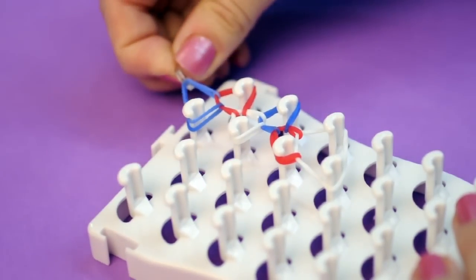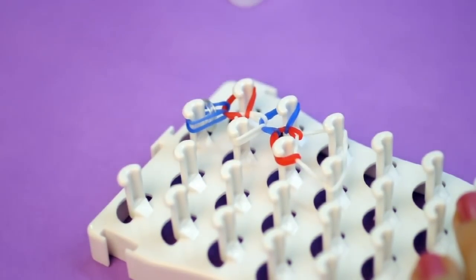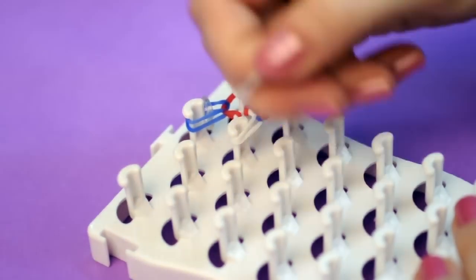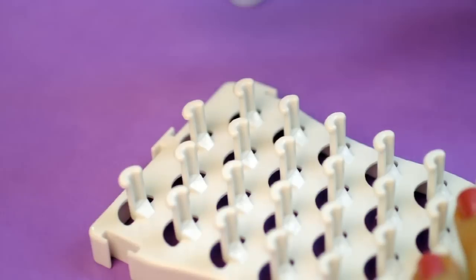Now gently pull your design off the loom. Start at the bottom end closest to you and gently zigzag back and forward to lift the ring off every pin.